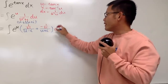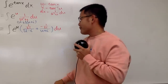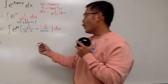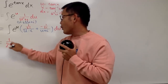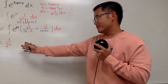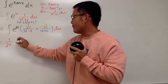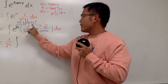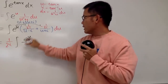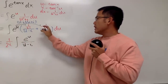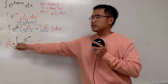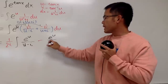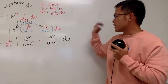Both terms share the factor 1 over 2i, so we factor that out as a constant multiple in front of the integral sign — 1 over 2i. Then we distribute, so for the first part we get e to the u over u minus i, and for the second part it's negative, giving minus e to the u over u plus i. Of course, we still have the du at the end.